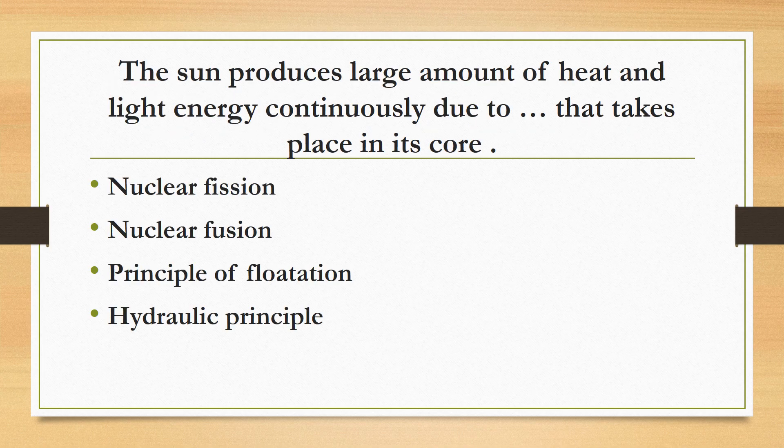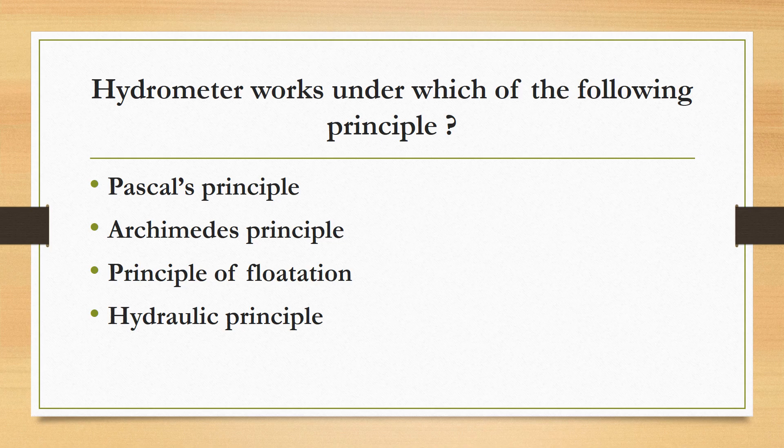The sun produces large amounts of heat and light energy continuously due to nuclear fusion in its core. Nuclear fusion is when lighter nuclei combine together to form a larger nucleus, releasing enormous amounts of nuclear energy. In contrast, nuclear fission is when heavy nuclei split into lighter nuclei, which is used in nuclear reactors.